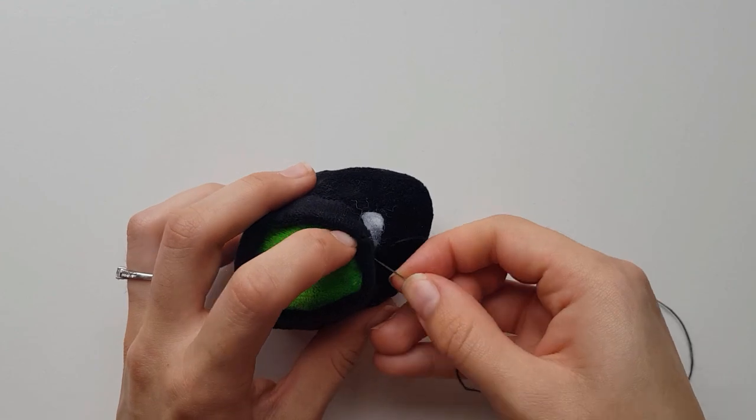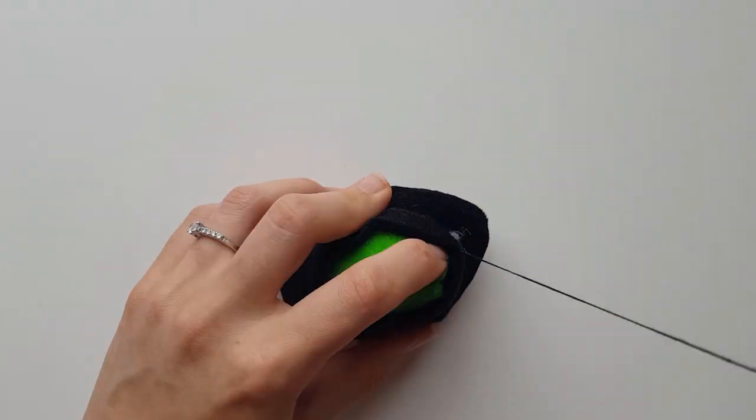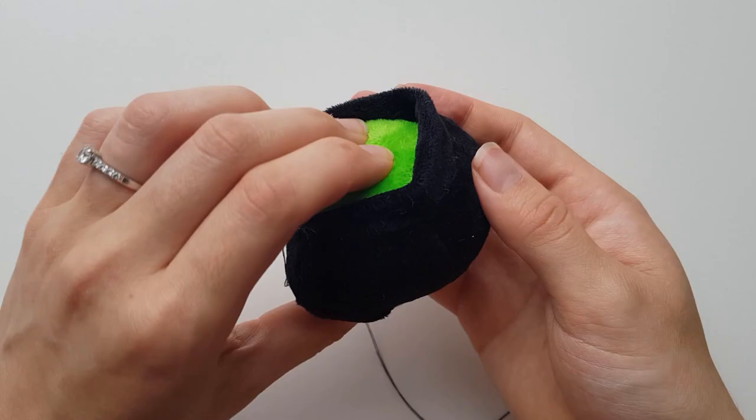Close off the remaining open edges with an invisible stitch, making sure that you join both the green and the lining together when you're closing this part off.